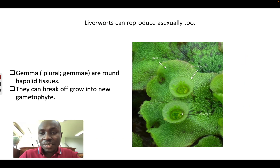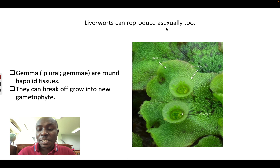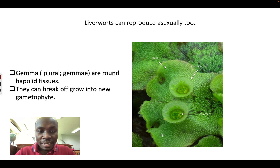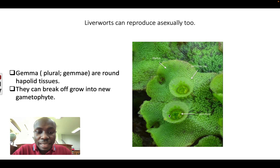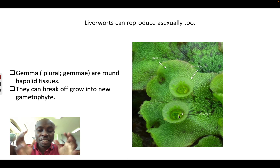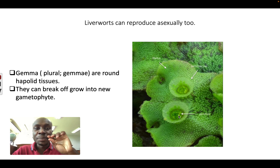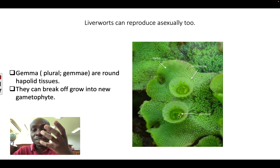Liverworts can also reproduce asexually, which means they do not need sperm and eggs to meet. On top of the thallus there are structures called gemma cups, which look like a cap. Inside these gemma cups are gemmae — one is a gemma, many are gemmae. The gemmae are haploid tissues or collections of cells that can break off, fall onto the ground, and grow back into a new liverwort. This is asexual reproduction.